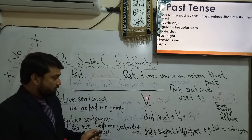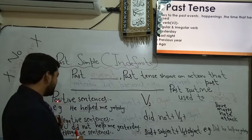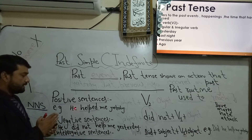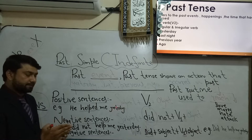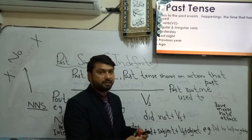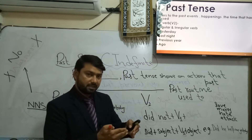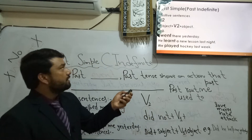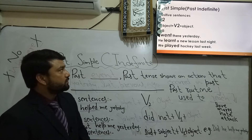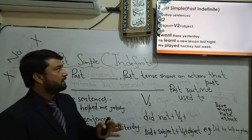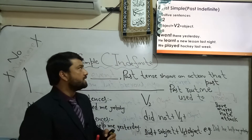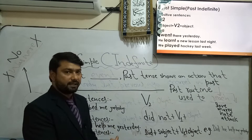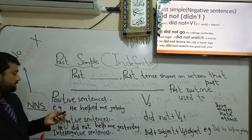We use V2 to make positive sentences. For example: He helped me yesterday. I bought a new car. I bought a new surgical mask to protect myself from coronavirus. More examples: I went there yesterday. He learned a new lesson last night. We played hockey last week. Now let's move on to making negative sentences.